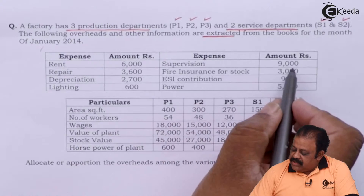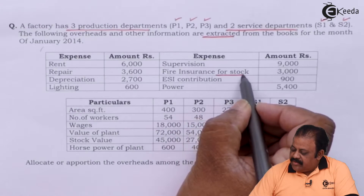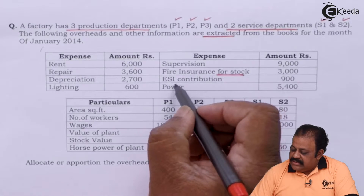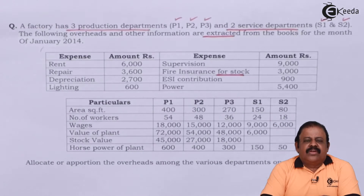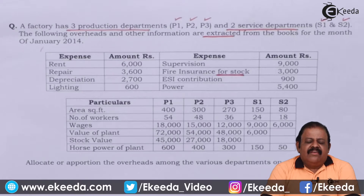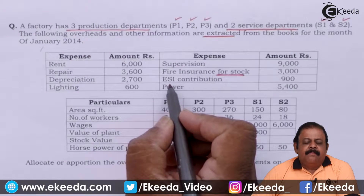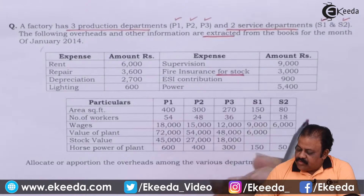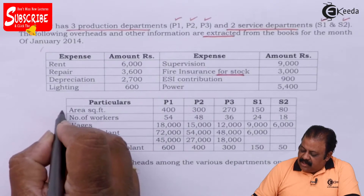Supervision 9000, fire insurance for stock 3000, ESI contribution — this is a statutory contribution by the employer for welfare of workers, that is based on Employees' State Insurance — and power 5400.